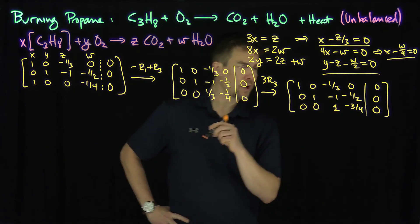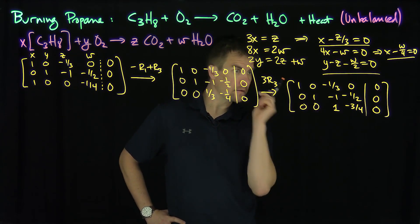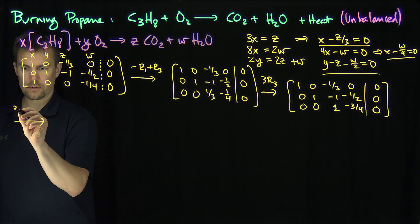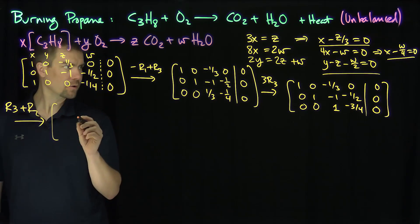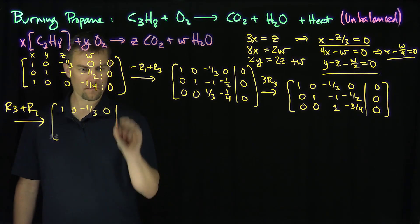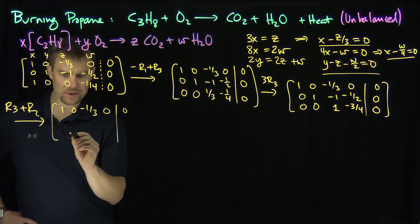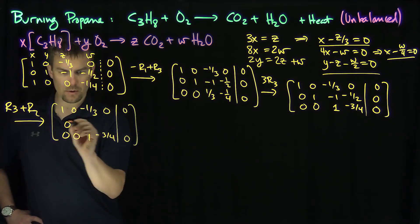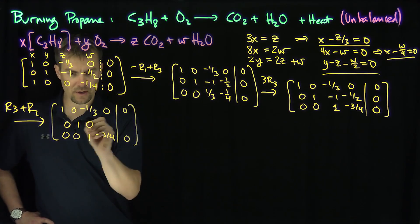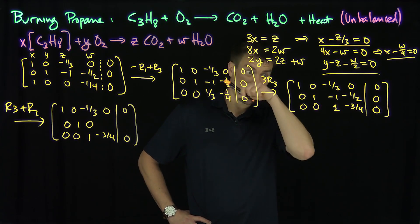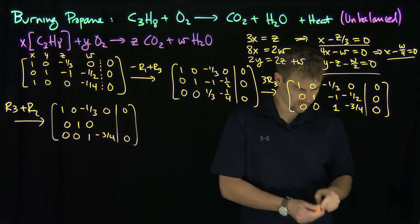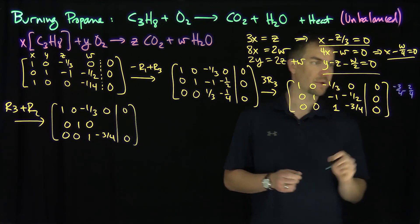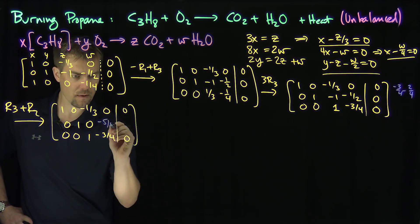Now I perform row 3 plus row 2 to create my new row 2. Row 1 stays the same. Row 3 stays the same: 0, 0, 1, negative three-quarters, 0. For the new row 2: 0, 1, and the Z entry becomes 0. The W entry becomes negative three-quarters plus negative one-half, which equals negative five-quarters. Augmented with 0.